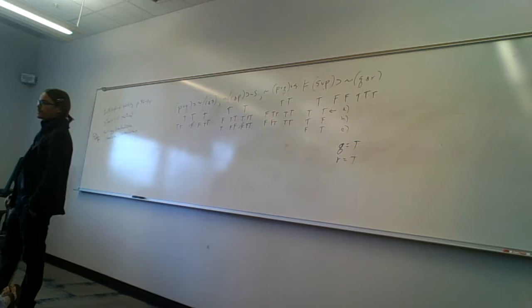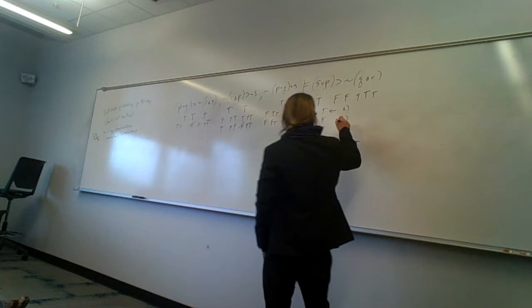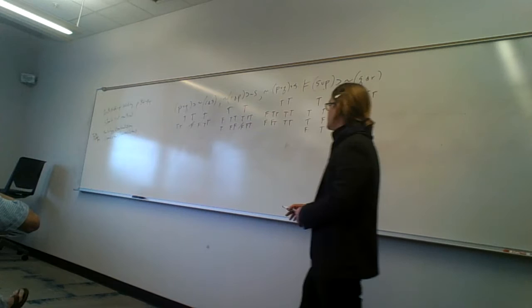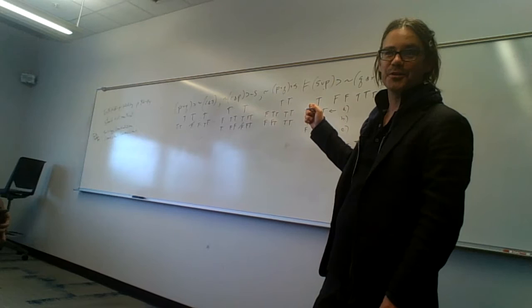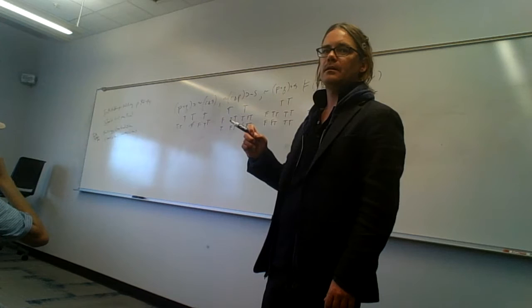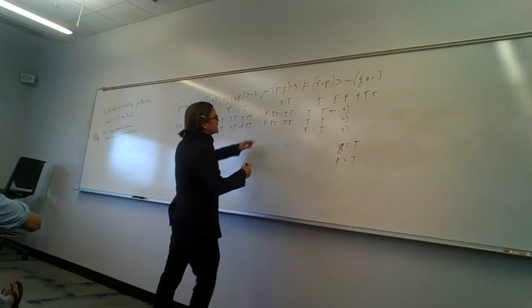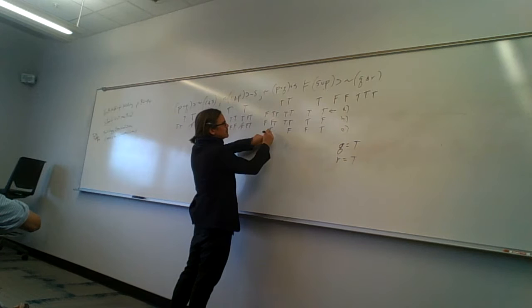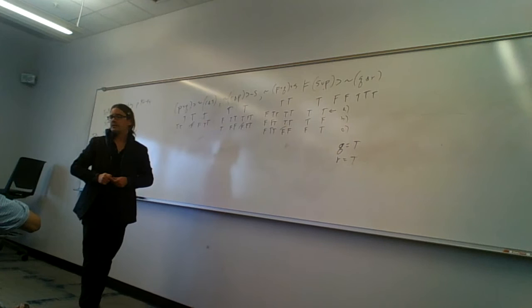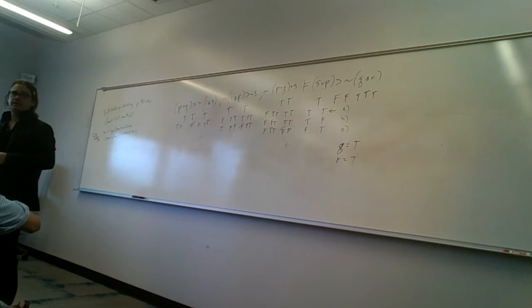We have one route left: possibility C, S false and P true. True-true with an or is true, and negated it becomes false — there's our contradiction immediately. So all three paths lead to contradictions. We cannot consistently construct a counterexample, which means none exists. Therefore the argument is valid. That matches what we'd get doing the full truth table the long way, but this method is much faster — especially avoiding 32 lines of truth table.